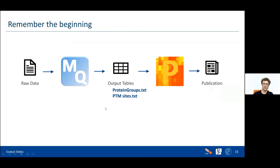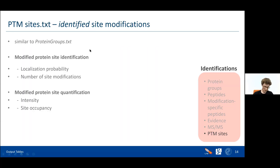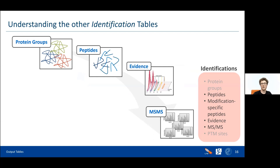Continuing with the slides: we saw how these tables look, and the ptmSites.txt tells us interesting information about modifications. Mostly these two tables — protein groups and PTM sites, and perhaps peptides — are the ones you want to analyze in Perseus. Typically at least these two tables are analyzed in Perseus.